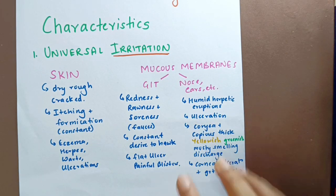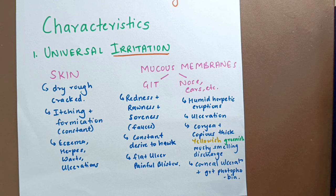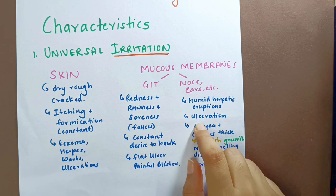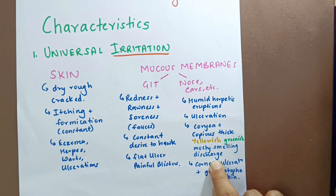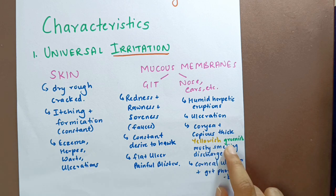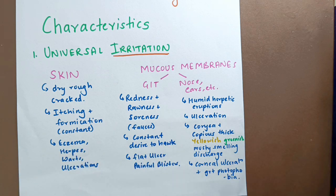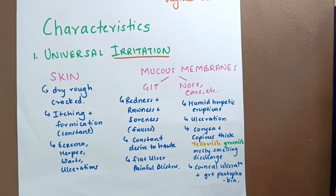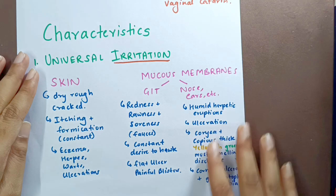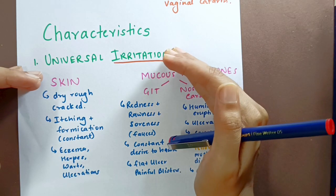On the nose and ears, it produces humid herpetic eruptions around the face — humid meaning there is some discharge. There is ulceration, coryza, and copious thick yellowish-greenish musty smelling discharge. The color of discharge in Natrium Carb — yellowish-greenish — is important to remember. Corneal ulceration is also seen, along with great photophobia.